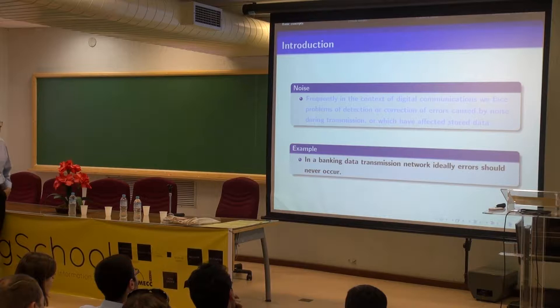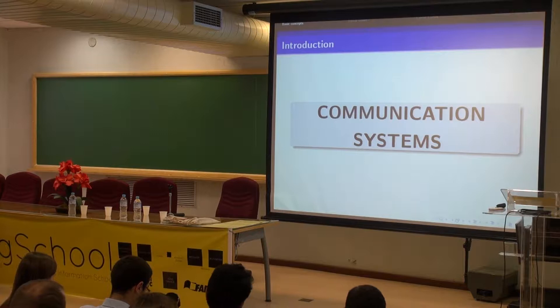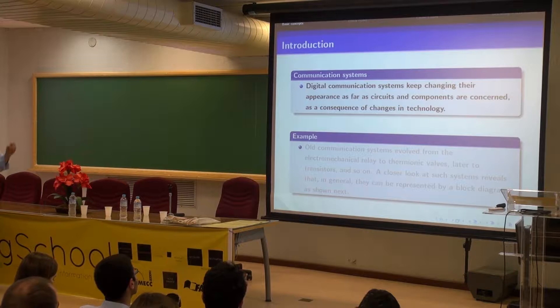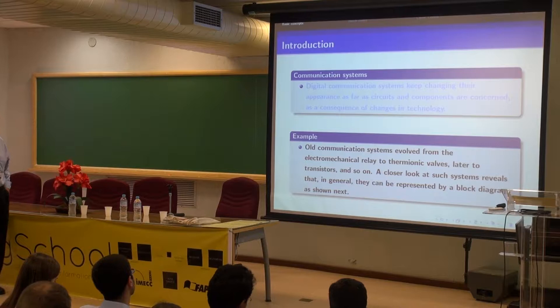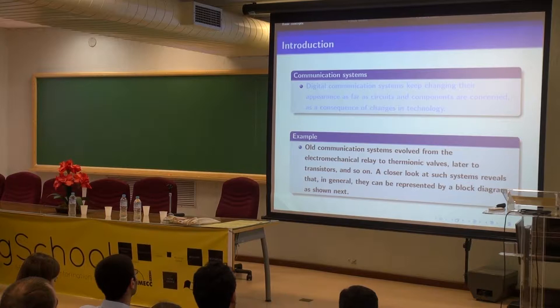For example, if you have a data transmission for a banking system, ideally you don't want errors to occur. In order to see the context where coding appears, we look at communication systems. They keep changing in terms of circuit components and equipment as technology changes. The idea is to make them smaller and smaller, more energy efficient — going from old relay equipment to tubes and then transistors and so on.